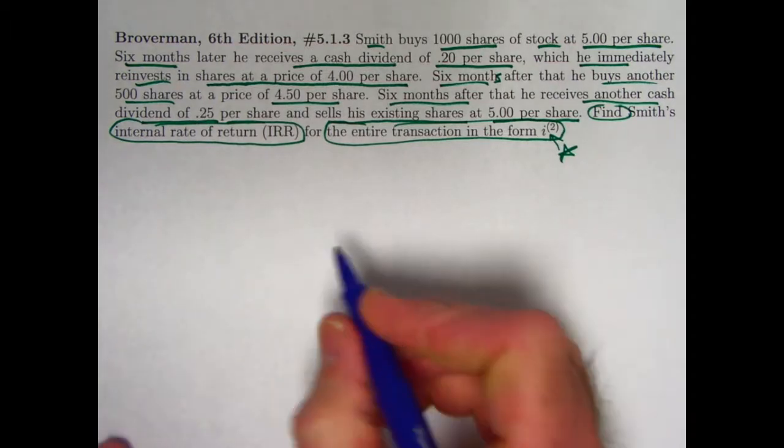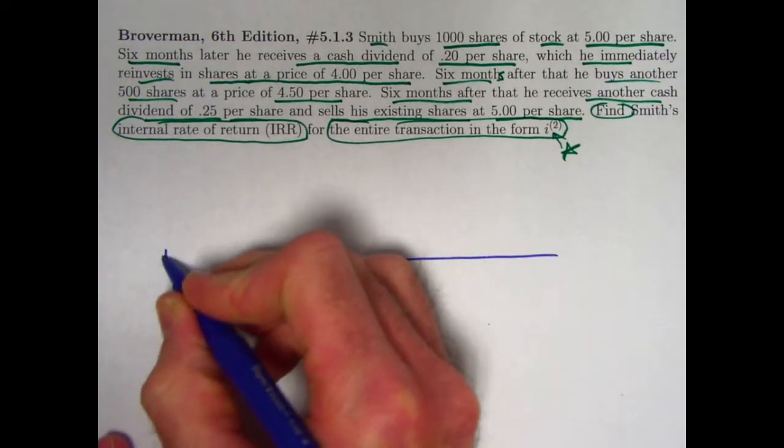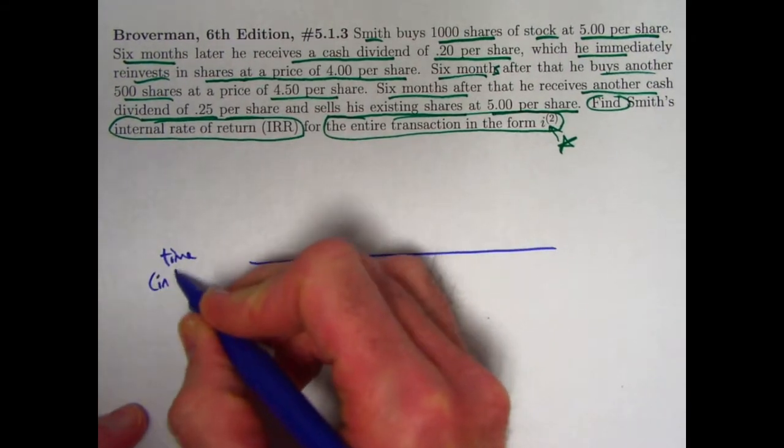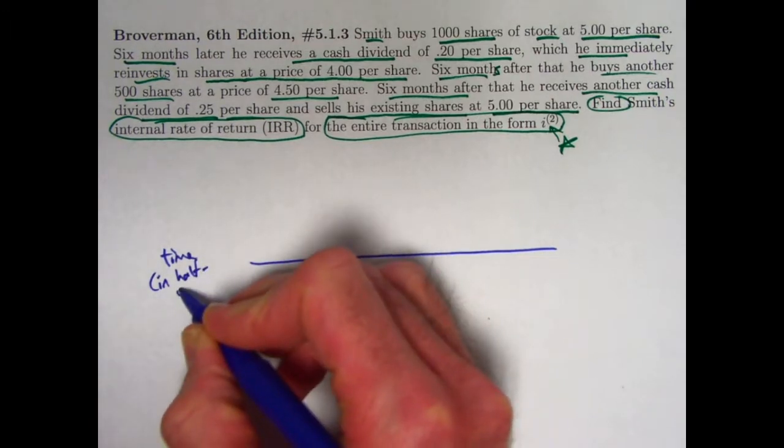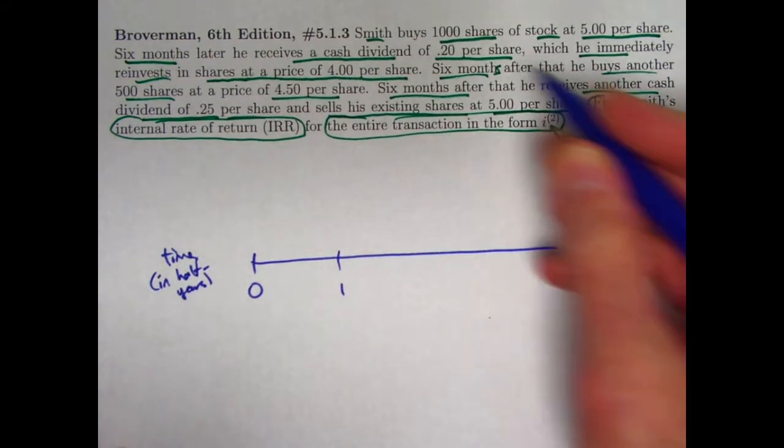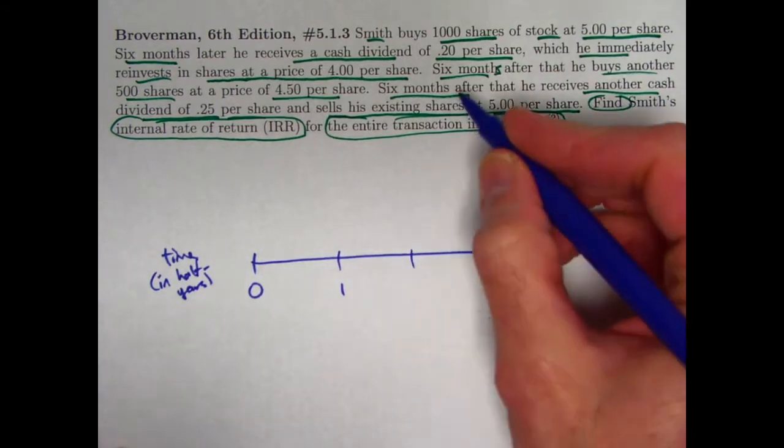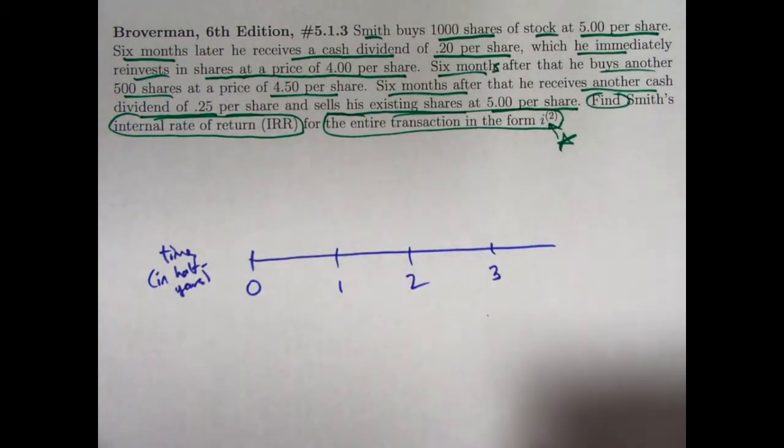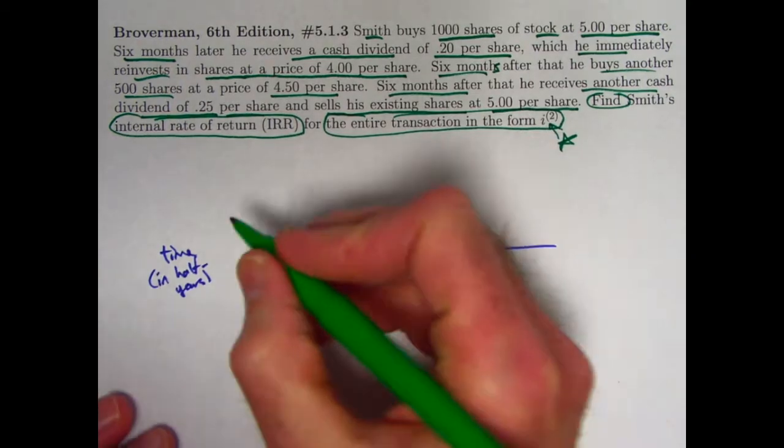Let's think about this with a timeline. It would make the most sense, since these transactions are every six months, for the time to be in half years. We'll write the dollar amounts as outgoing money or incoming money with a negative sign for outgoing money and a positive sign for incoming money to Smith.